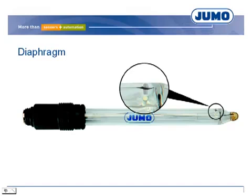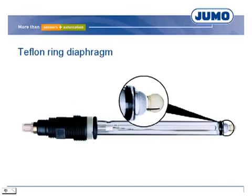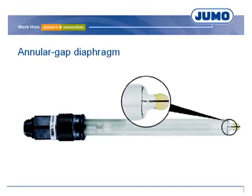The ceramic diaphragm can be used for measurement in clean solutions like drinking water and swimming pools. For heavily polluted water such as wastewater, a Teflon ring diaphragm is used, or open diaphragms like annular gap or perforated diaphragm.